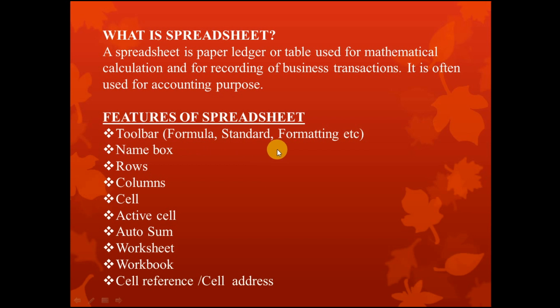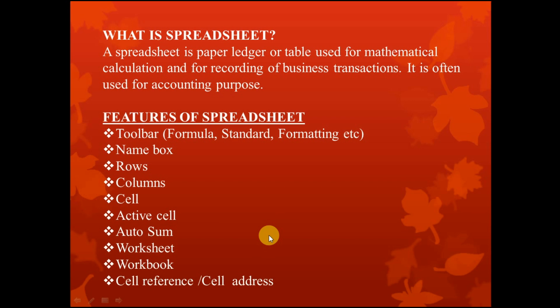Features of spreadsheet application include the toolbar, which contains the formula bar, the standard toolbar, the formatting toolbar, and others. We also have the name box, rows, columns, active cell, worksheets, workbook, and cell reference or cell address. At Grade 5 level, you are asked to name only these features.